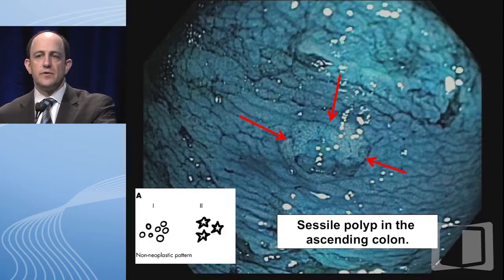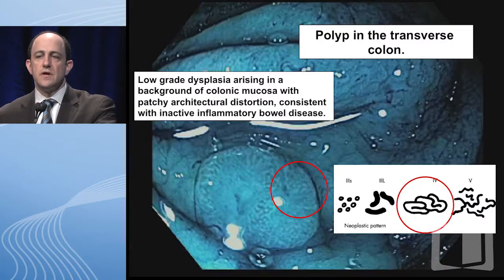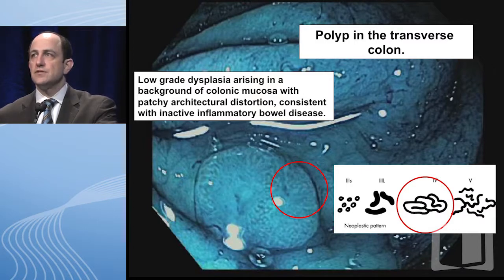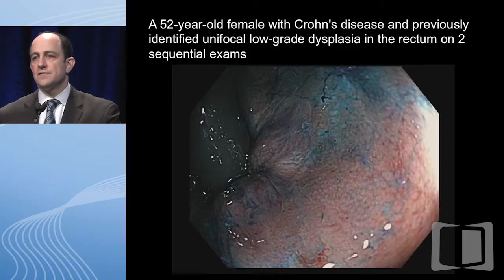Here's another lesion visible with methylene blue — you can appreciate how deep the staining is and how rich these images might be. That was another inflammatory polyp without significant concerns. But here was another lesion found in the transverse colon, larger than those other two. The pit pattern shows some of those dysplastic changes — this was in fact low-grade dysplasia arising in the background of colonic mucosa with distortion consistent with a colitis-associated dysplastic lesion. We were able to remove it completely and the patient had active surveillance in follow-up.